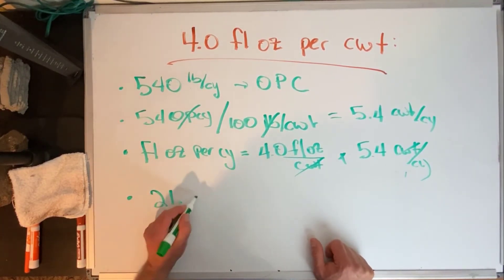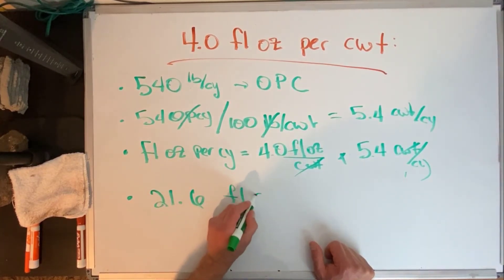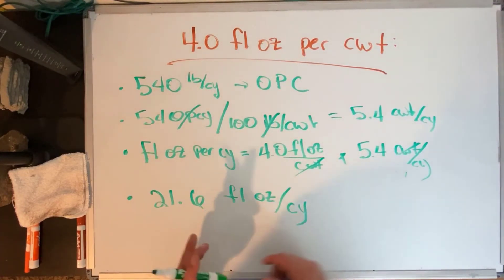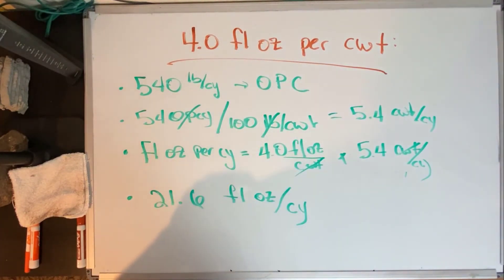And there you have it folks. When somebody says I need four fluid ounces per hundred weight for a cubic yard, that's how you figure it out to be 21.6 fluid ounces per cubic yard.